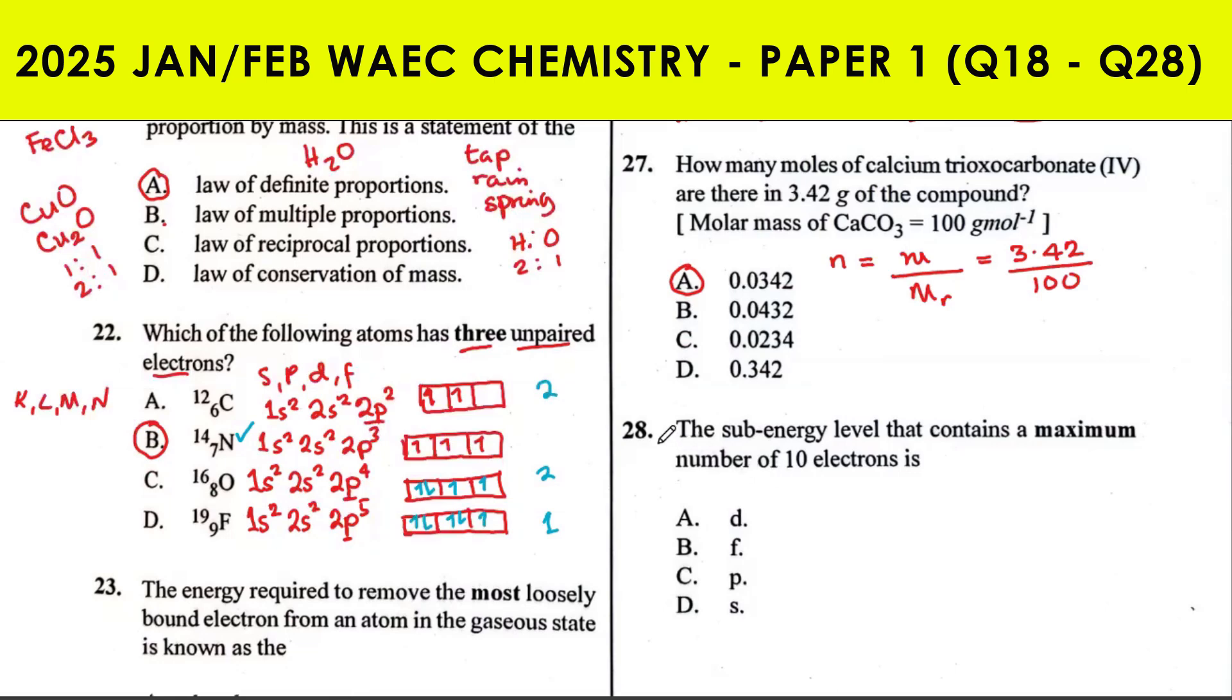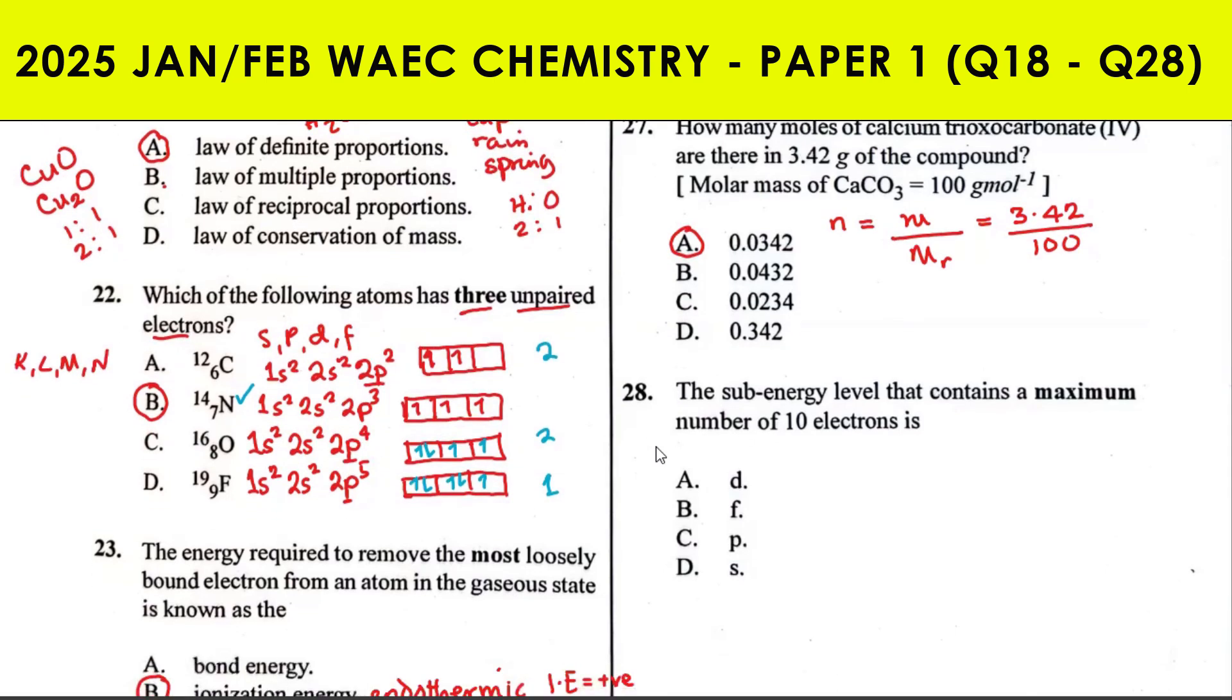Question 28: the sub-energy level that contains a maximum number of 10 electrons is what? These are all sub-energy levels. This one contains only one orbital, this contains three orbitals.